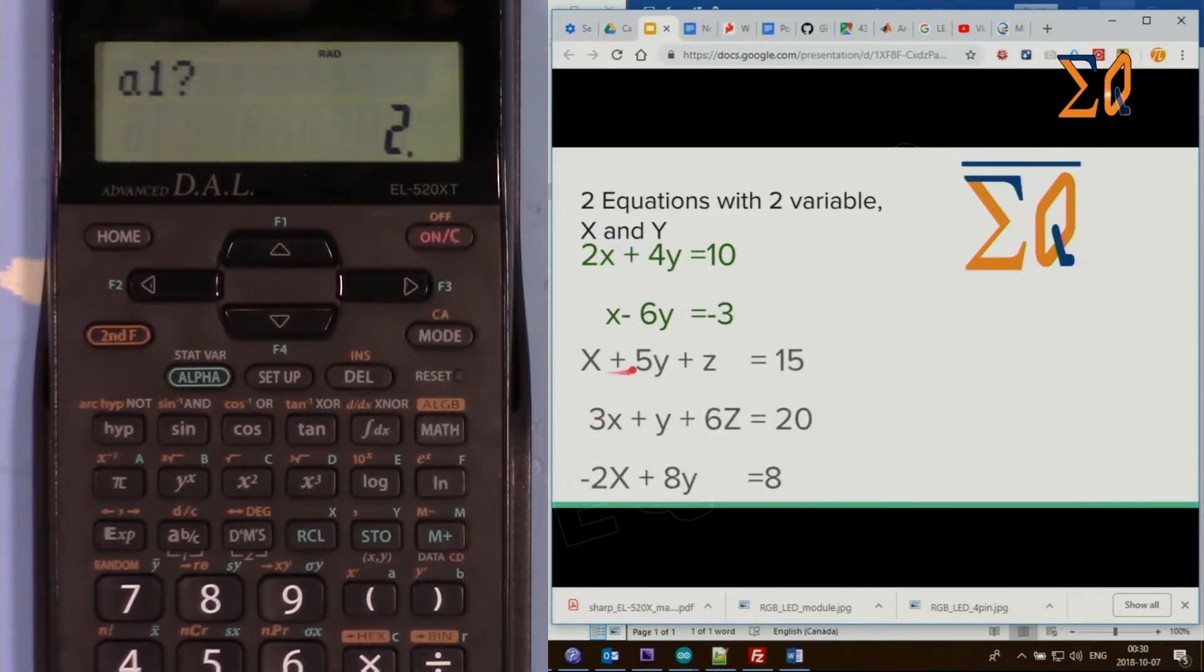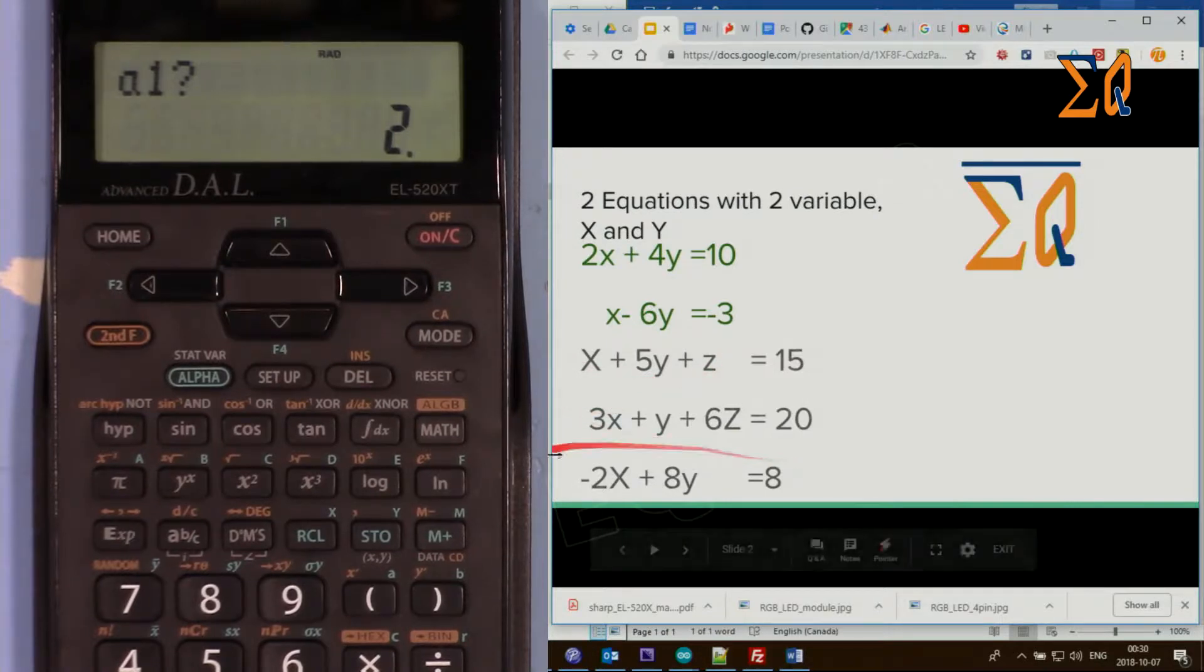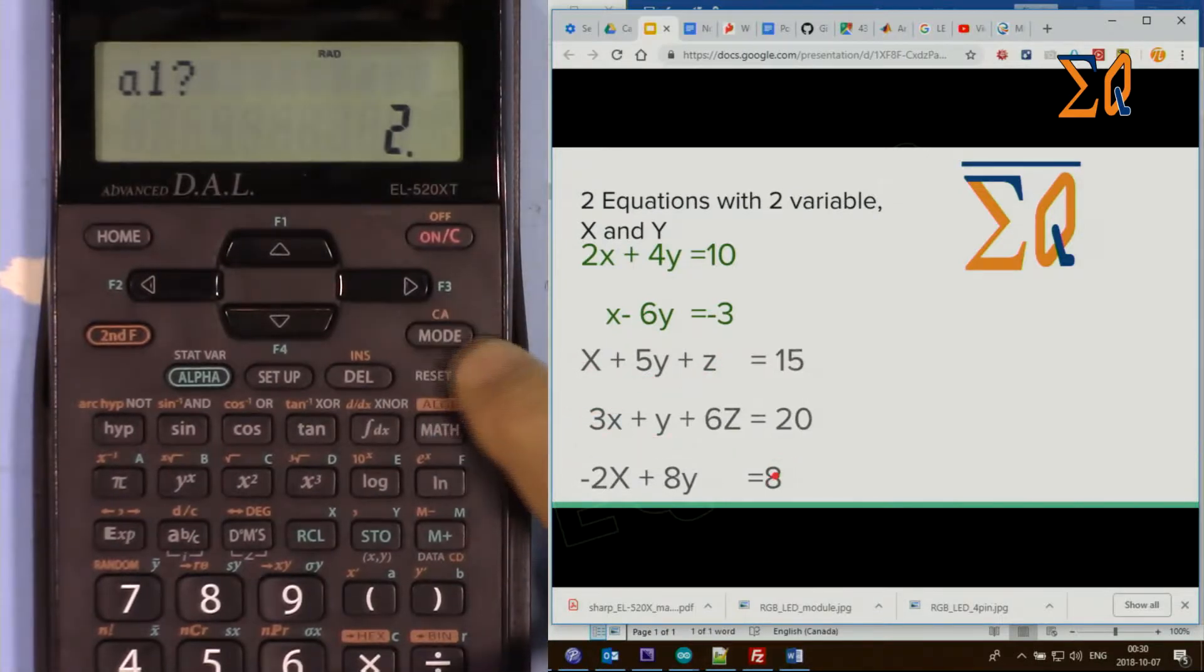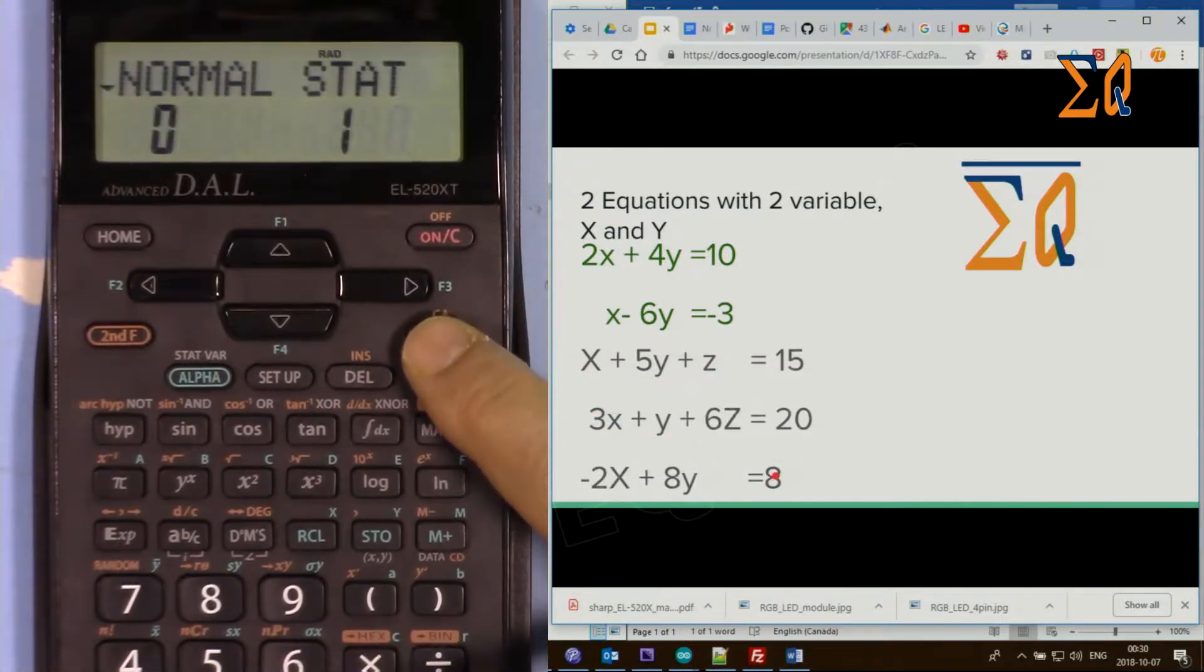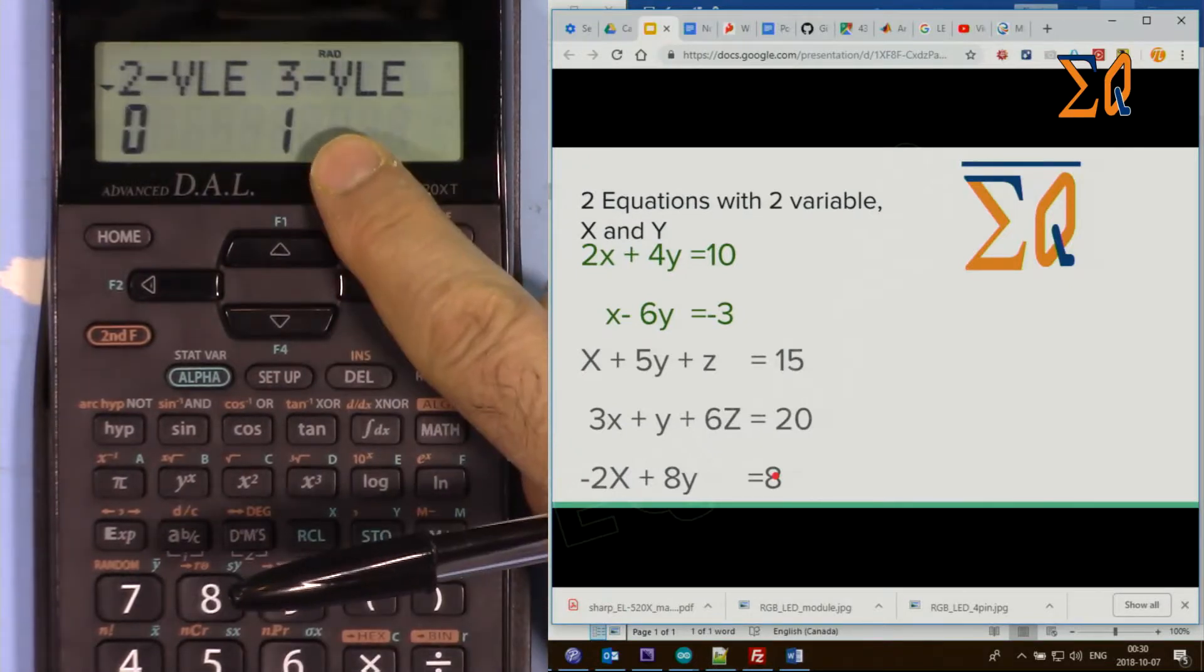Now let's say you have this one. This has x, y, and z, so we have three variables, we have three equations. Change the mode again, press mode 2, and then for three value press 1.